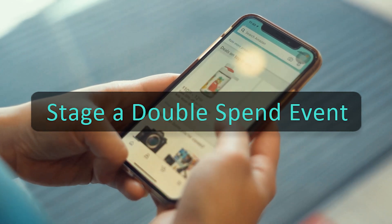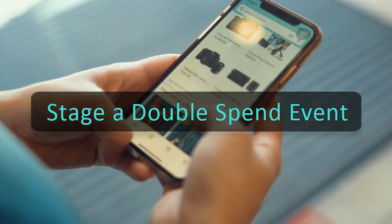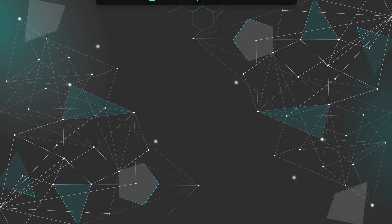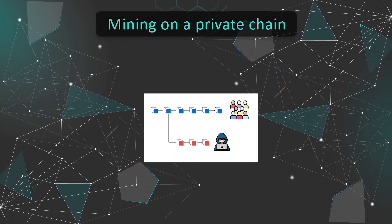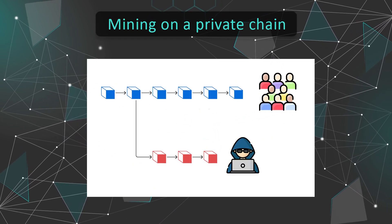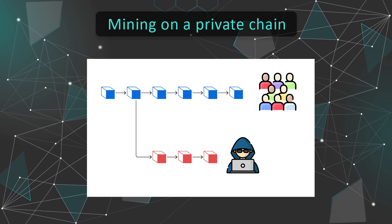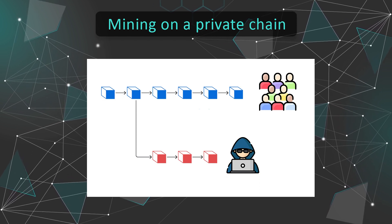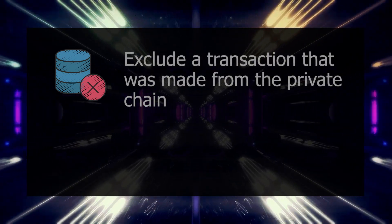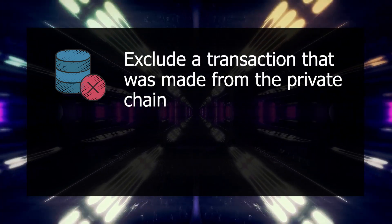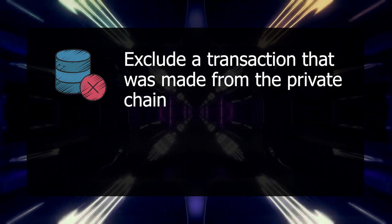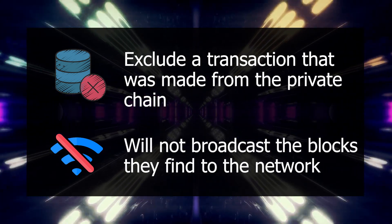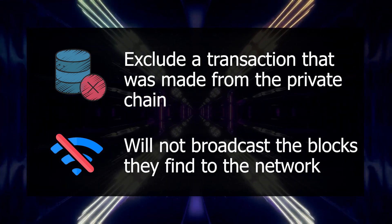The malicious miner wanting to perform a double spend will first create a regular transaction, spending their coins for either goods or a different currency on an exchange. At the same time, they will begin mining a private chain. They follow the usual mining protocol but with two exceptions: first, they will not include their own transaction spending their coins in their privately mined chain; second, they will not broadcast the blocks they find to the network — hence we call it a private chain.